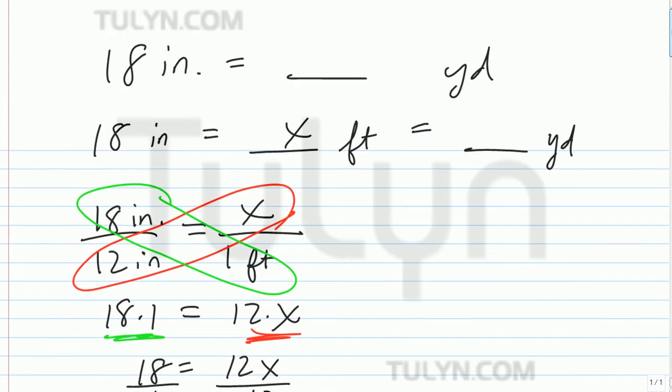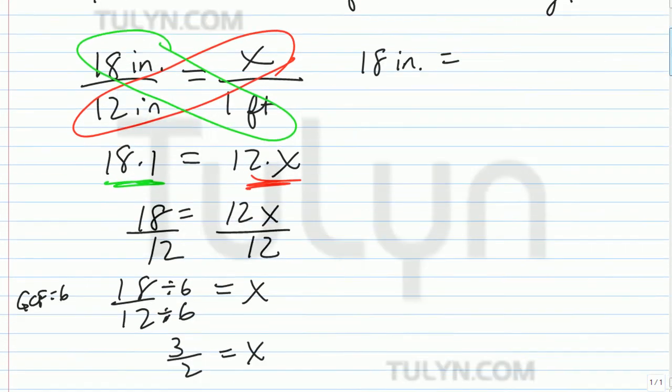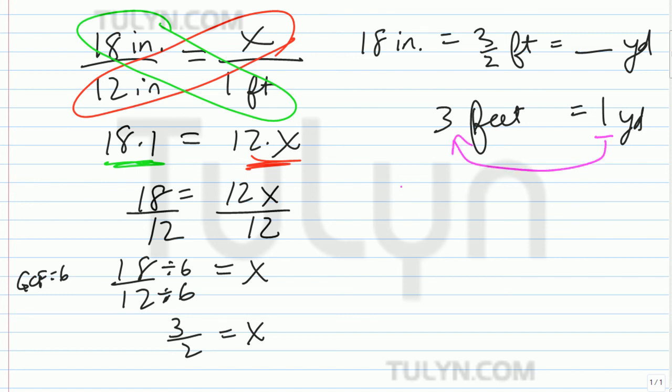So actually, right here, 18 inches equals 3 halves feet. And to figure out how many yards, 1 foot, no, 1 yard is equal to 3 feet. So what we're going to do is take 3 halves and multiply by 3. Because in order to go from yards to feet, we've got to multiply by 3.